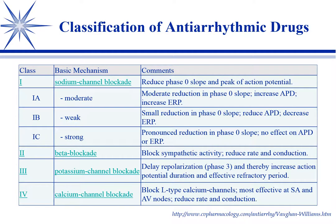Most of our arrhythmias are tachyarrhythmias — high heart rate. The antiarrhythmics we use can be divided into four classes. Class one is sodium channel blockage, with subtypes A, B, and C. These reduce the phase zero slope, which is the initial depolarization — it slows down depolarization. All of these work primarily by that mechanism, so they're less prone to propagate abnormal rhythms.